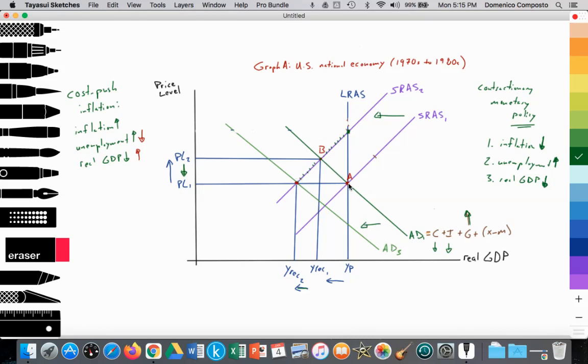So cost-push inflation, we're going from point A to point B, SRAS shifts in. At point B, we have a rise in inflation or cost-push inflation from PL1 to PL2. We have a decrease in real GDP from YP to Y recession. The quantity of aggregate demand is decreasing from point A to point B, so firms begin to fire excess resources like labor. So we have rising unemployment in the economy.